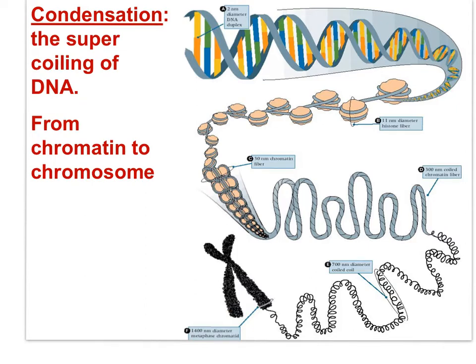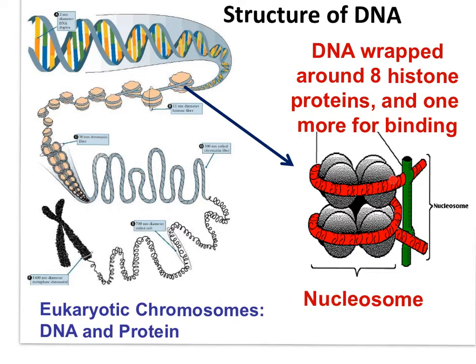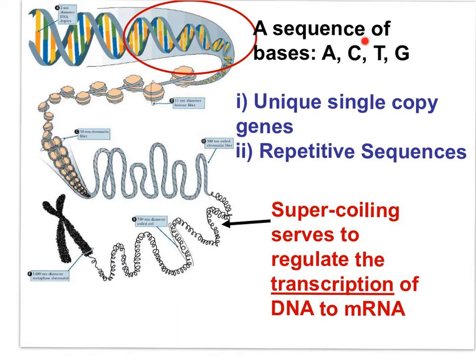Replication happens during interphase. Condensation happens during prophase of mitosis or meiosis. The association of DNA wrapped two and a half times around eight histone proteins is called a nucleosome. The nucleosome is the fundamental mechanism by which DNA is packed. Sequences of nucleotides along the DNA code for sequences of amino acids in a polypeptide, and functional protein determines the phenotype. Some DNA has repetitive sequences — non-coding regions — which are excellent for use in DNA profiling for crime, paternity, or immigration cases. DNA condensation can also influence transcription of DNA into mRNA; increased condensation reduces transcription.